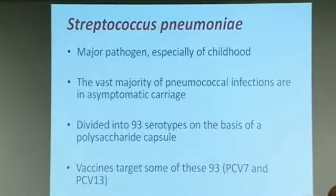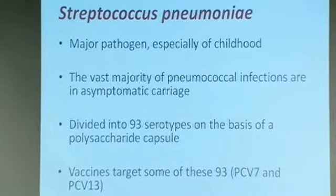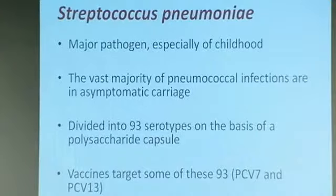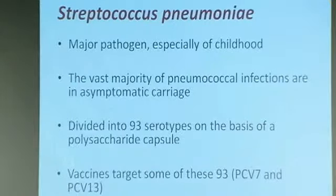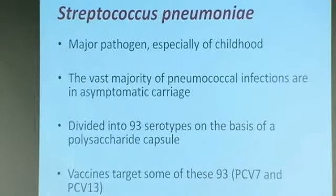I have to thank Nick for doing the job of introducing the pneumococcus. The thing I want you to focus on is that the vast majority of pneumococcal infections take the form of asymptomatic carriage. Almost all pneumococci in the world are living in the nasopharynx of somebody, probably a child, and they're not causing disease. They're divided into 93 serotypes on the basis of the polysaccharide capsule. We've got a vaccine that targets seven and one that targets 13, leaving still about 80 serotypes which the vaccines do not target.